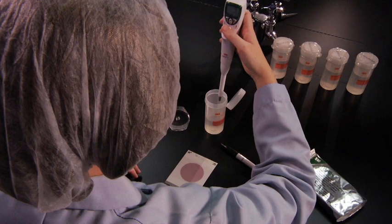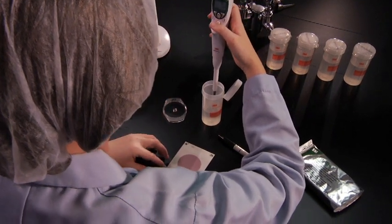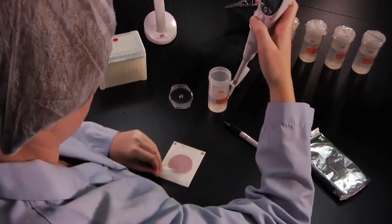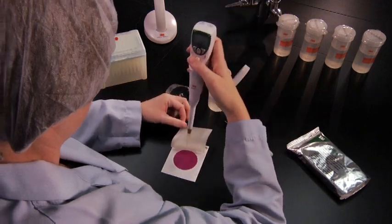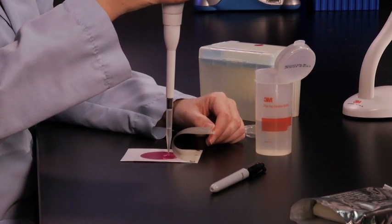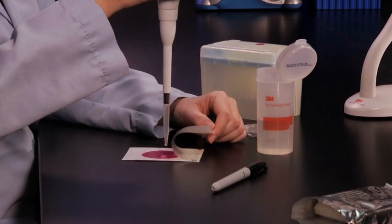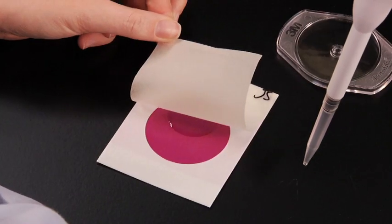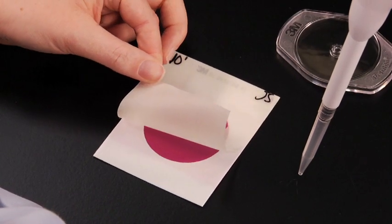Draw 1 mL of sample into the pipetter. Then, lift the top film and hold the pipetter perpendicular to the 3M PetriFilm plate. Pipet the sample onto the center of the bottom film. Carefully roll the top film down to avoid entrapping air bubbles.